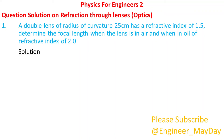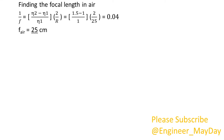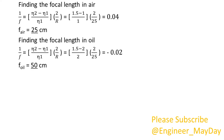Solution. Given: R equals 25 centimeters, eta 2 equals 1.5, eta oil equals 2, eta air equals 1. Finding the focal length in air, which equals 25 centimeters. Finding the focal length in oil, which equals 50 centimeters.